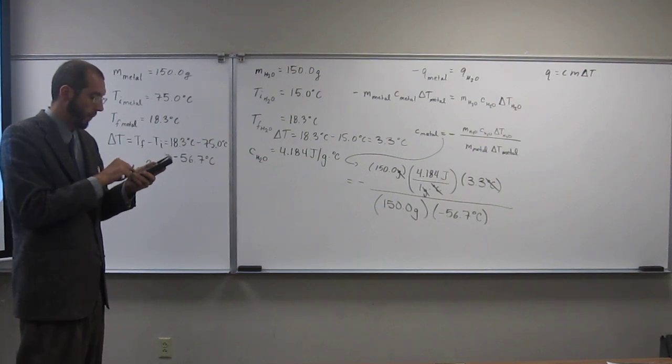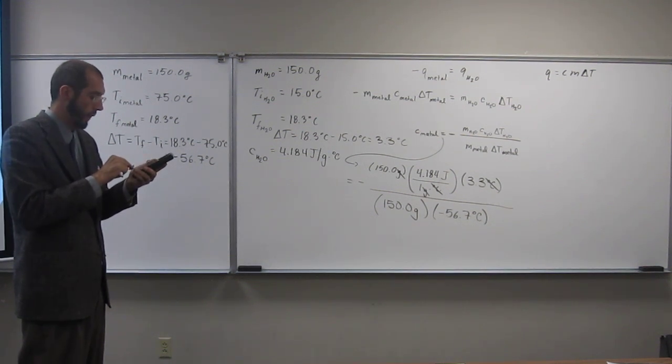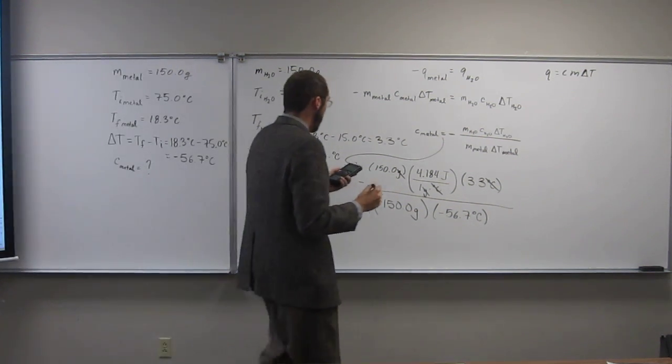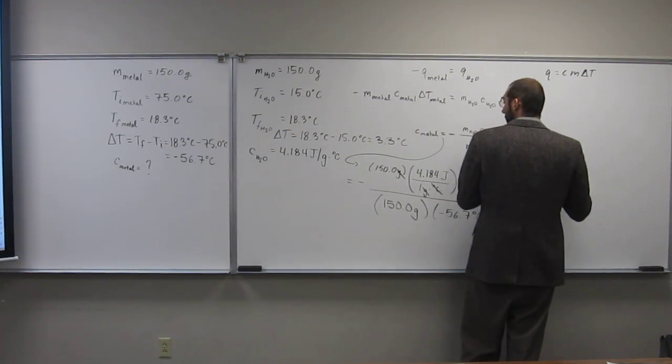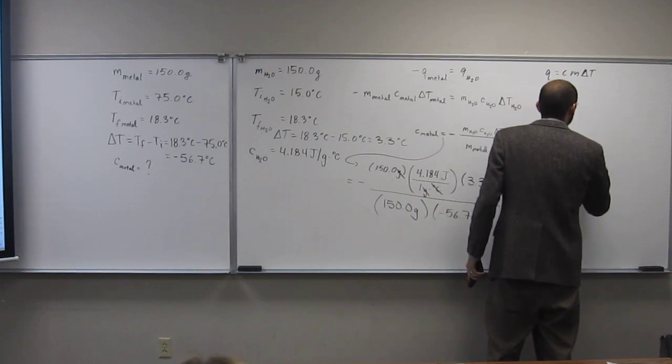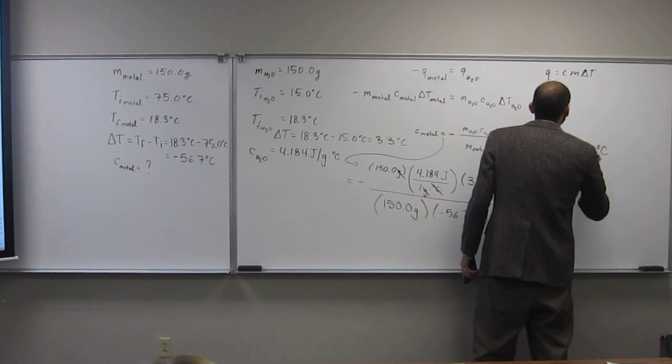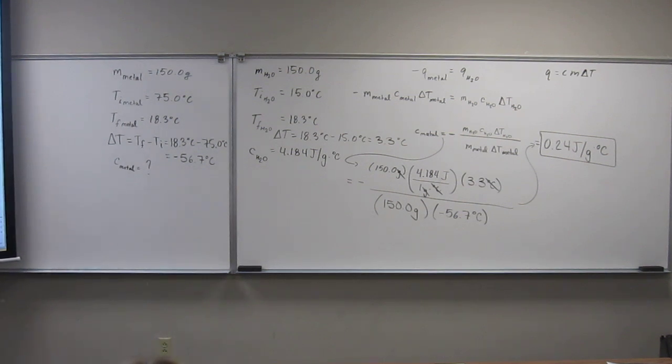So let's just go through this. 150 times 4.184 times 3.3 divided by 150 divided by 56.7. So I got an answer that is 0. And it's got to be the two sig figs, right? 0.24 joules per gram degree C for the specific heat capacity of this metal. Okay? Is that what you got? Yes. Yes. Okay, good. You got that? Okay, are there any questions on this one? Questions, gentlemen? Anything? Okay.